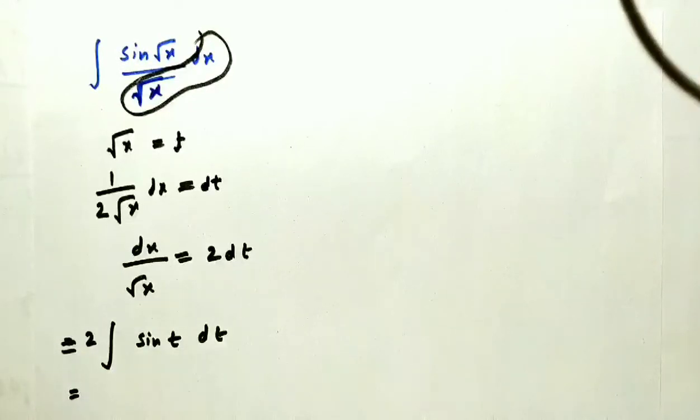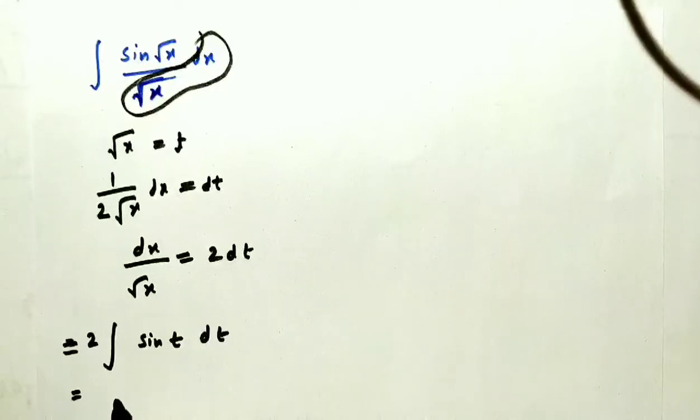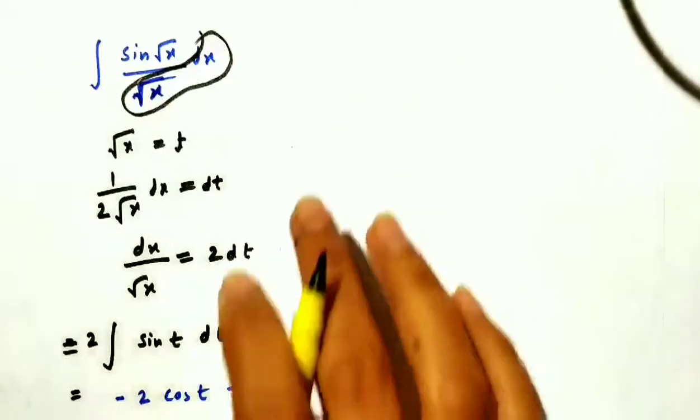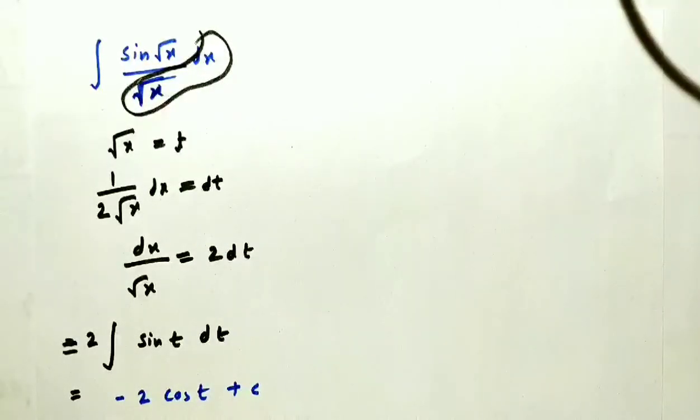The integral of sin(t) is -cos(t), so -2cos(t) plus c. This is an indefinite integral, so we add the constant.